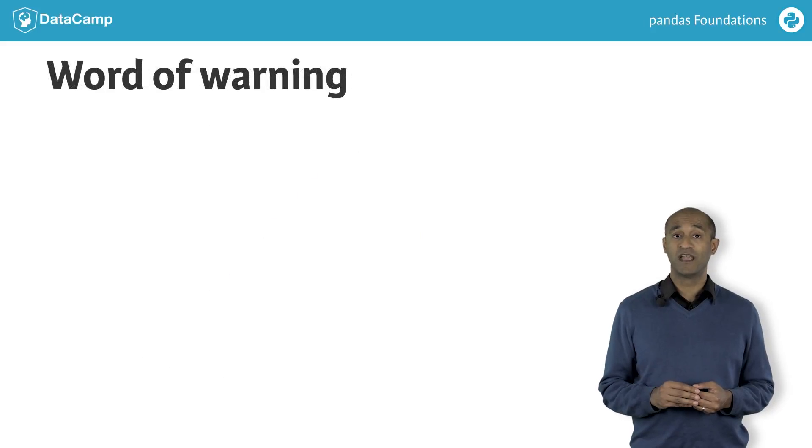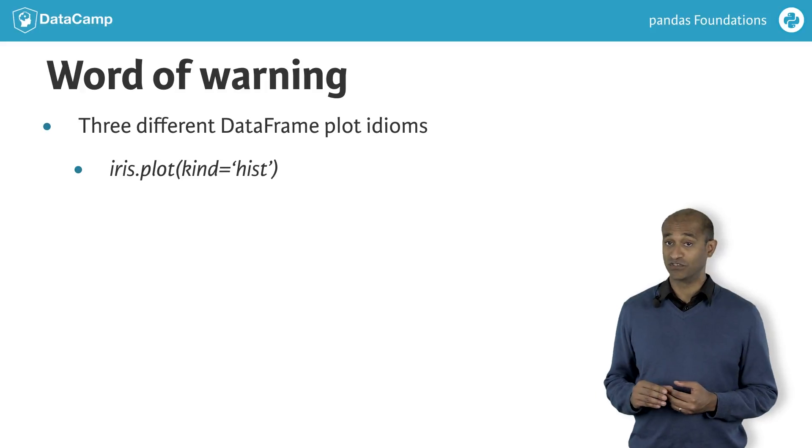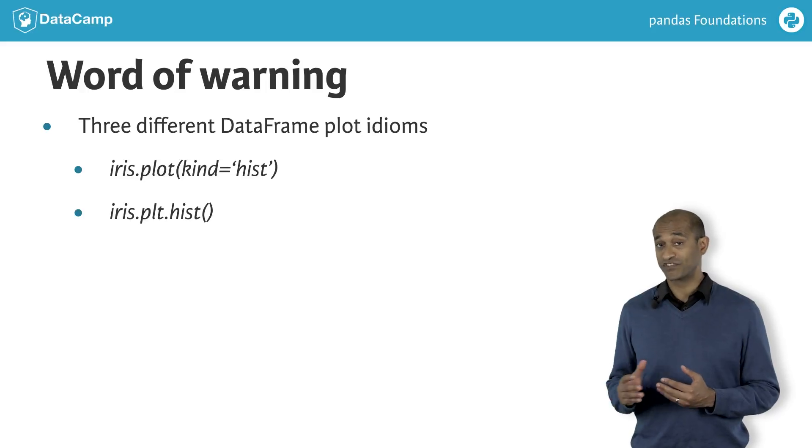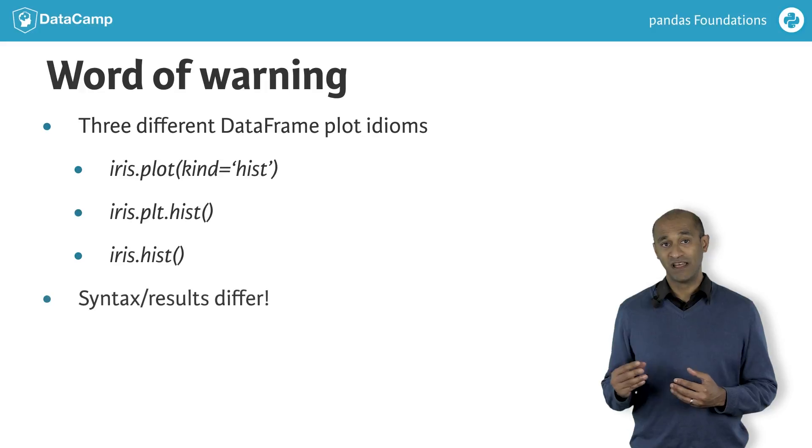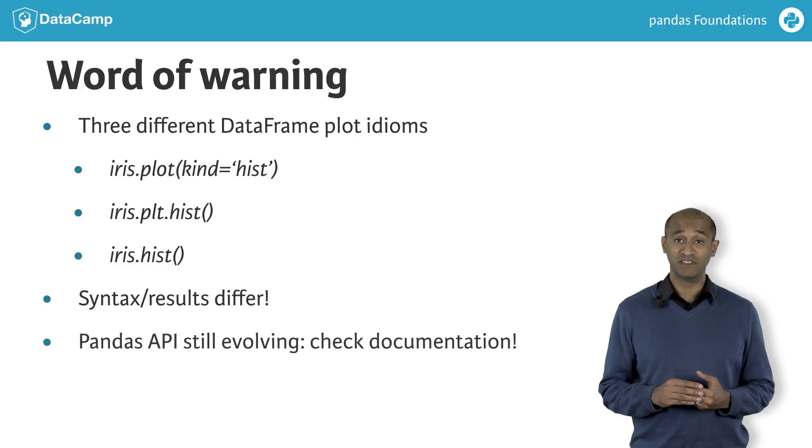One warning. At present, there are three different data frame plotting idioms in Pandas. For instance, we can use iris.plot with kind equals hist, or iris.plot.hist, with the same syntax for arguments. There is also iris.hist. The syntax has defaults that are slightly different in the latter call. These variants work for hist, scatter, box, and related plot functions. Check the documentation for details.